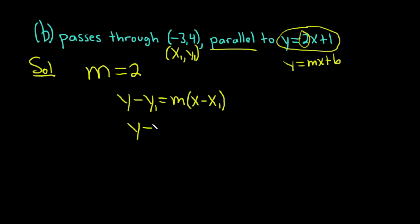So y minus, and then y sub 1 is 4. And this is equal to m, which is 2. Parentheses. Oh, it's a little bit sneaky here. It's x minus negative 3. There's a minus here, and there's a minus in the negative. So it'll become plus 3. Be careful there.